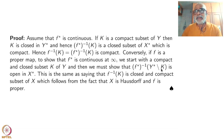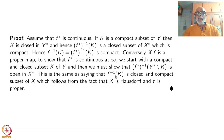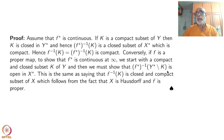I have to show that the inverse image of Y-star minus K is open in X-star. We have seen that f-star-inverse of Y-star minus K is X-star minus f-inverse of K. So it is saying that f-inverse of K is a closed and compact subset of X.